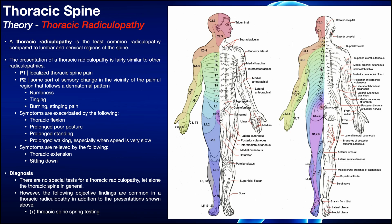Those sensory changes include numbness, tingling, and that burning, stinging pain. If you've got both P1 and P2 combined, it's more likely that the person has a thoracic radiculopathy.